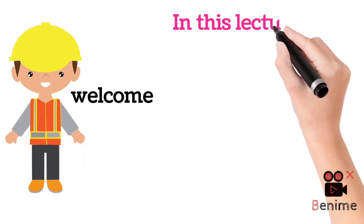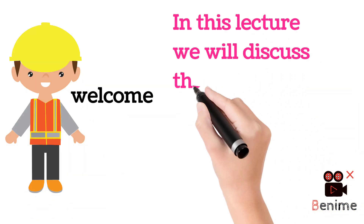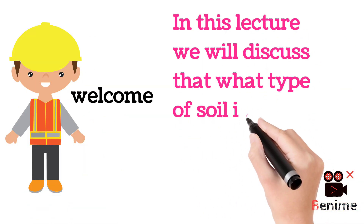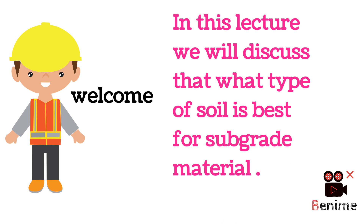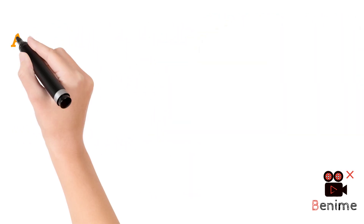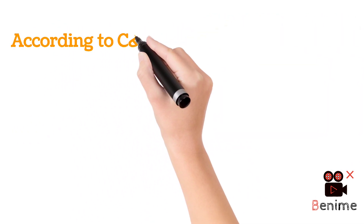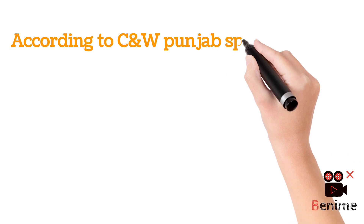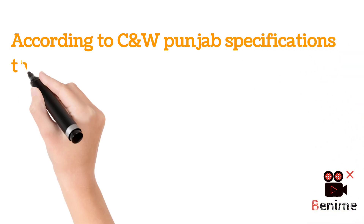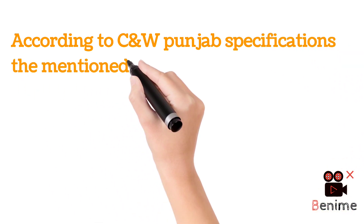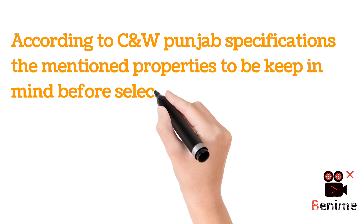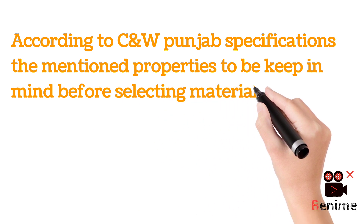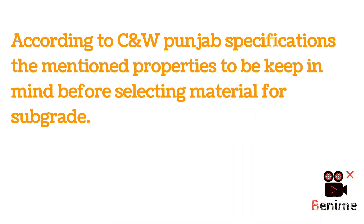Welcome. In this lecture we will discuss what type of soil is best for subgrade material. According to C&W Punjab specifications, the following properties are to be kept in mind before selecting material for subgrade.